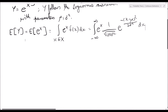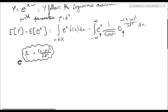We have e to the x and another e to some function of x. Focusing on these two products of exponentials, we get e to the quantity x minus x minus mu squared over 2 sigma squared. Now let's combine these two fractions into a single one using a common denominator, giving us 2 sigma squared x minus x minus mu squared, all over 2 sigma squared.